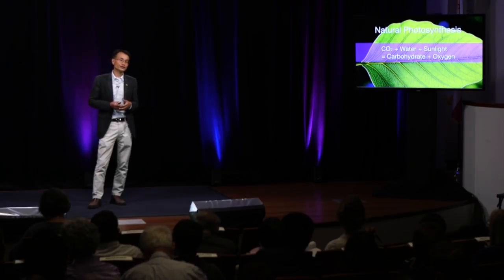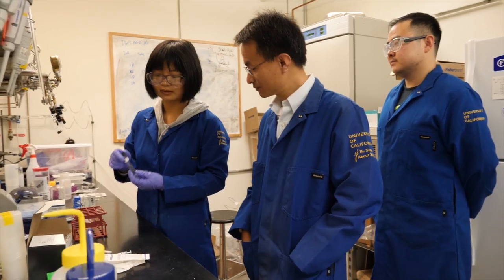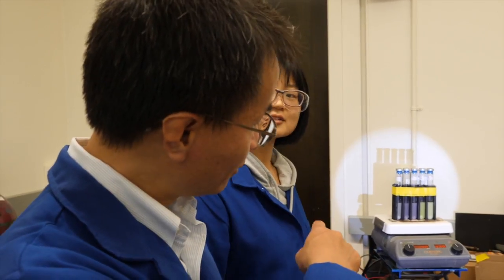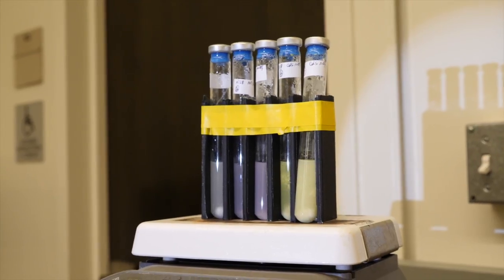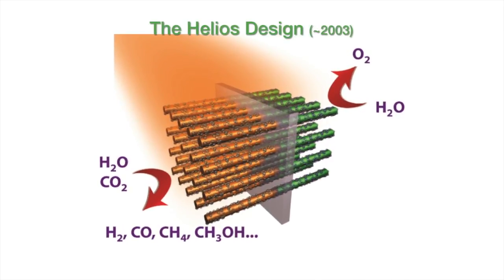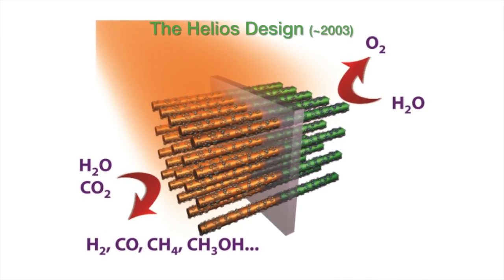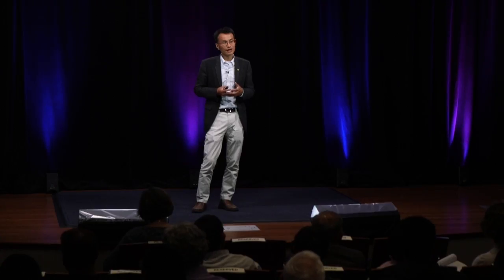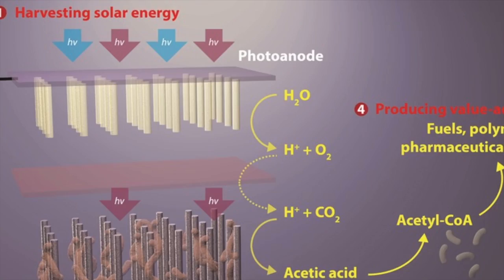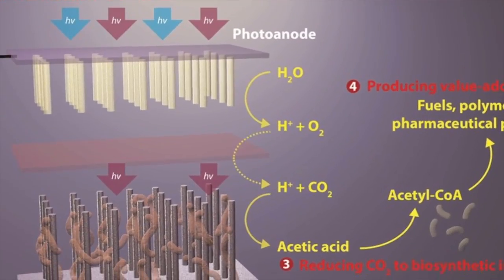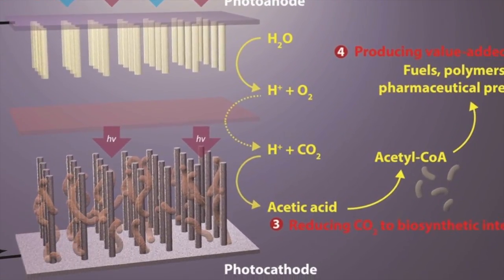Moving back more than ten years ago, when we launched the Helios program at the Lawrence Berkeley National Lab, we put this particular artificial photosynthetic design on paper. In order to make this design work, we needed to discover a new class of semiconductor materials that capture sunlight, and a new class of catalysts to promote the chemical reactions we want to carry out. Over the past ten years, we finally figured out ways to link a collection of biological and synthetic catalysts to semiconductor nanostructures, and indeed we can do the chemistry as we planned.